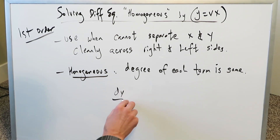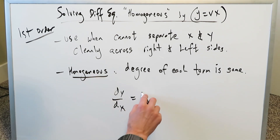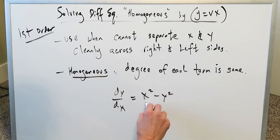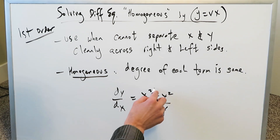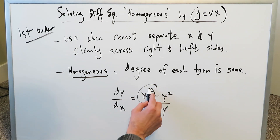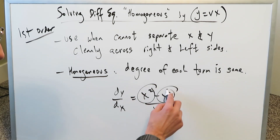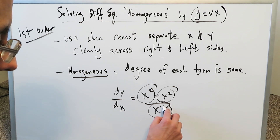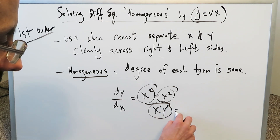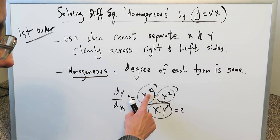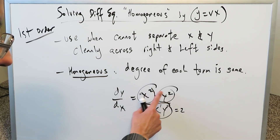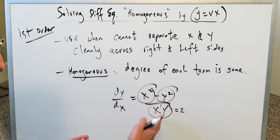Look at this example of what a homogeneous equation looks like. You have something like x squared minus y squared divided by xy. This is homogeneous because you have a square here, a square here, and a square here — the x and y in the denominator are degree 1 each, adding up to 2. The degree of each term is equal, and that's exactly what a homogeneous equation is.